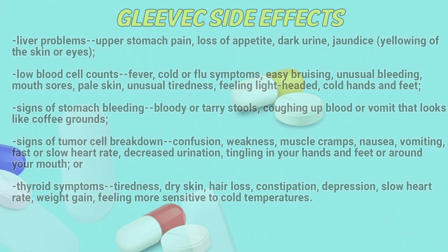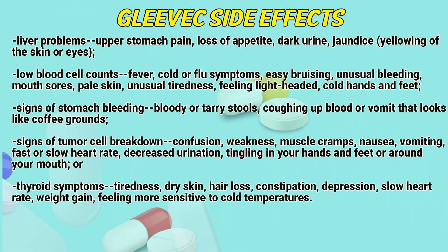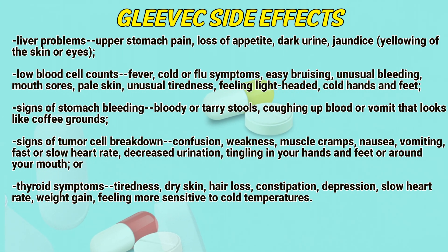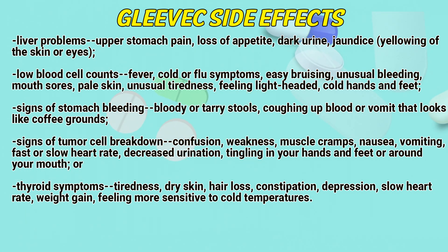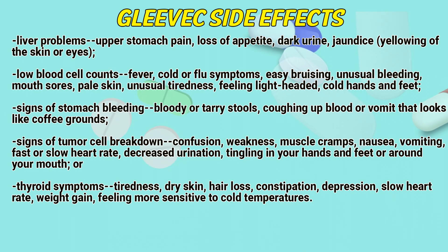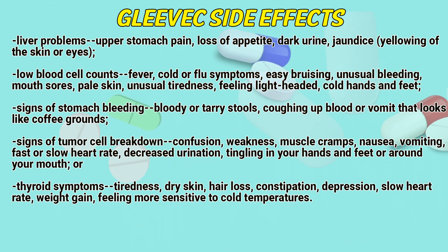Liver problems: upper stomach pain, loss of appetite, dark urine, jaundice, yellowing of the skin or eyes. Low blood cell counts: fever, cold or flu symptoms, easy bruising, unusual bleeding, mouth sores, pale skin, unusual tiredness, feeling lightheaded, cold hands and feet.